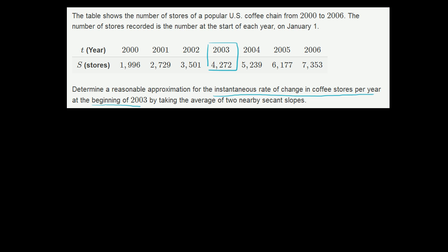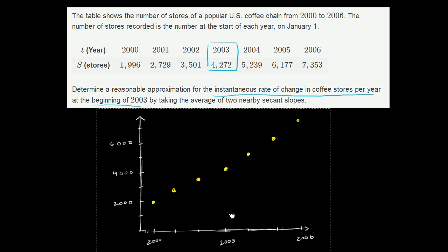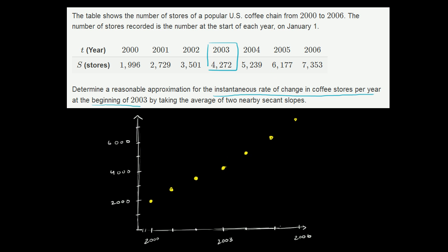So let's visualize this. This right over here, I've plotted all of the points. And let me make sure that the axes are clear. This horizontal axis, this is my t-axis that tells us the year. And then the vertical axis is the number of stores.